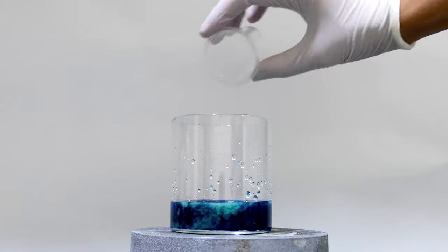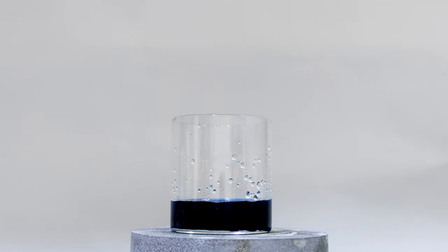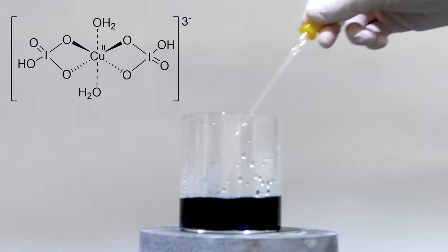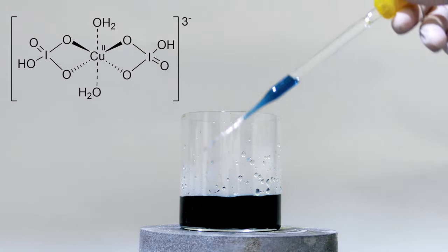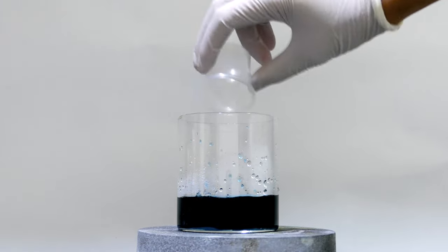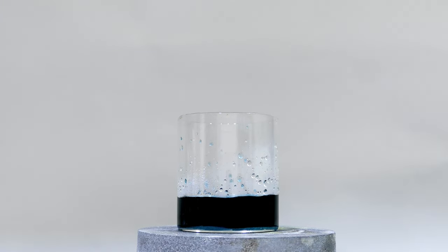After that, 5 grams of potassium hydroxide is added as a solution. Upon addition, the contents of the beaker turn into a deep blue color. Then the chemical, which is 5 grams of potassium persulfate, is added, and the heat is turned on.